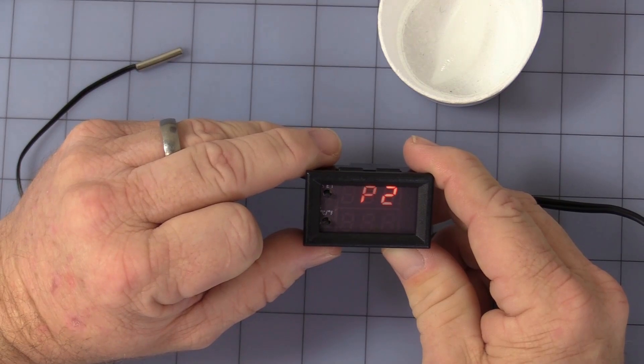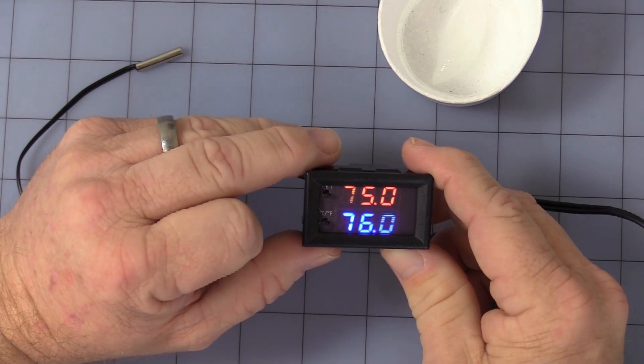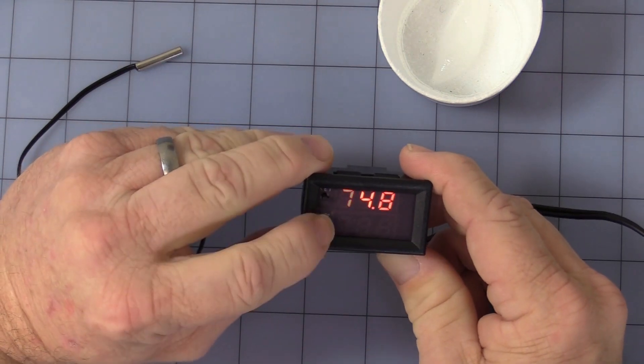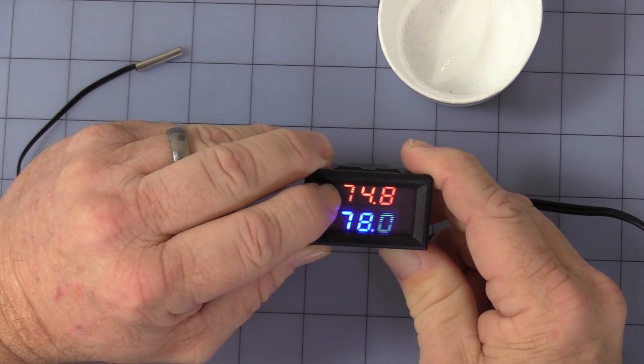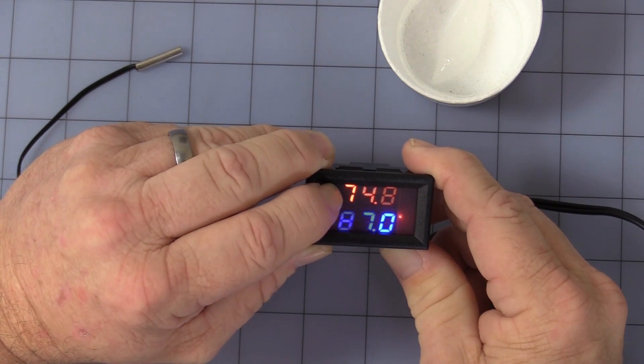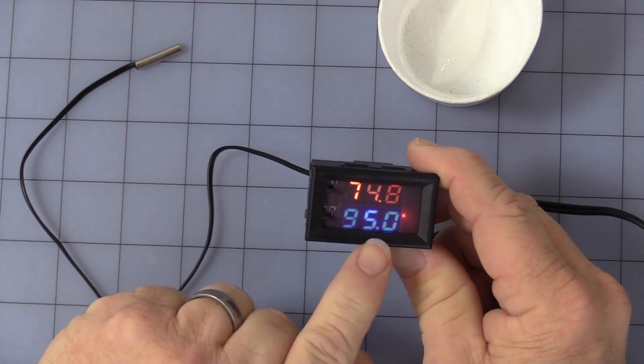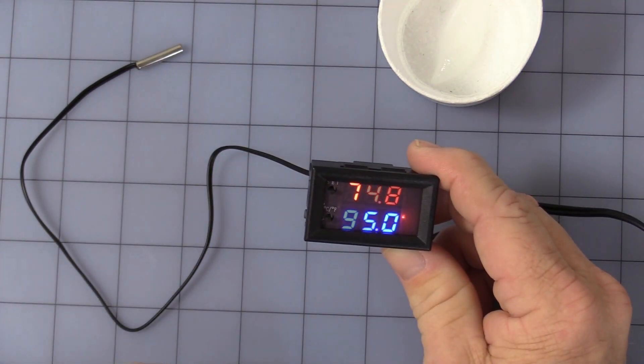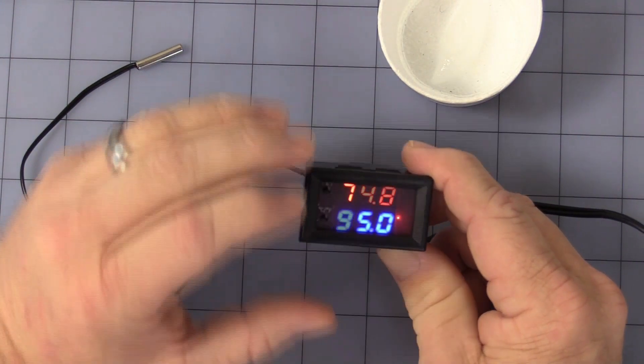Once it stops flashing, it goes back into program. Now, you'll never be able to set this set temperature above 95 degrees. No matter what you do, you cannot get it to go above 95 degrees.